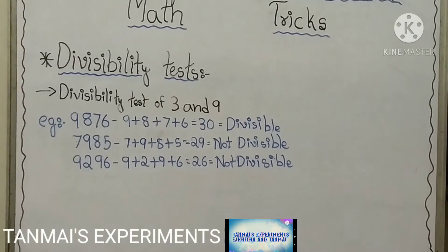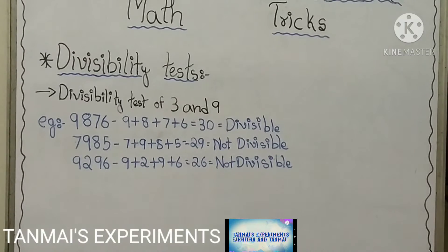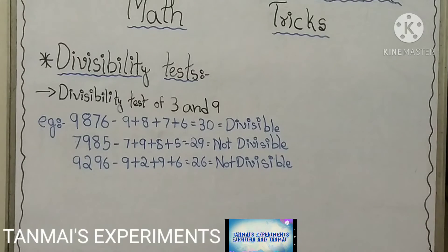The next example is 7,985. 7 plus 9 plus 8 plus 5 equals 29, and 29 is not divisible by 3, so the entire number 7,985 is not divisible by 3. The next example is 9,296. 9 plus 2 plus 9 plus 6 equals 26, and 26 is not divisible by 3, so the entire number 9,296 is not divisible by 3.